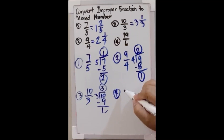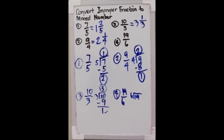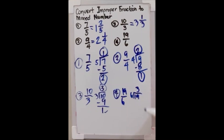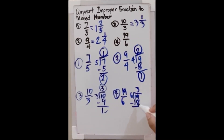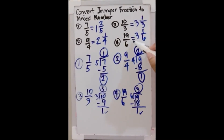The last example: we have 19 divided by 6. Dividing 19 by 6 gives us 3. 3 times 6 is 18, and 19 minus 18 is 1. So we can write the mixed number starting with 3, then the remainder 1 over the denominator 6. So 19 over 6 is equal to 3 and 1 over 6.